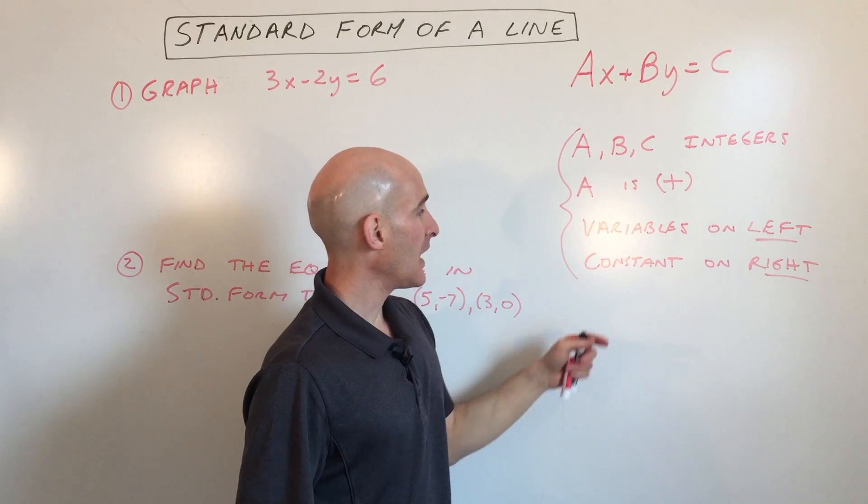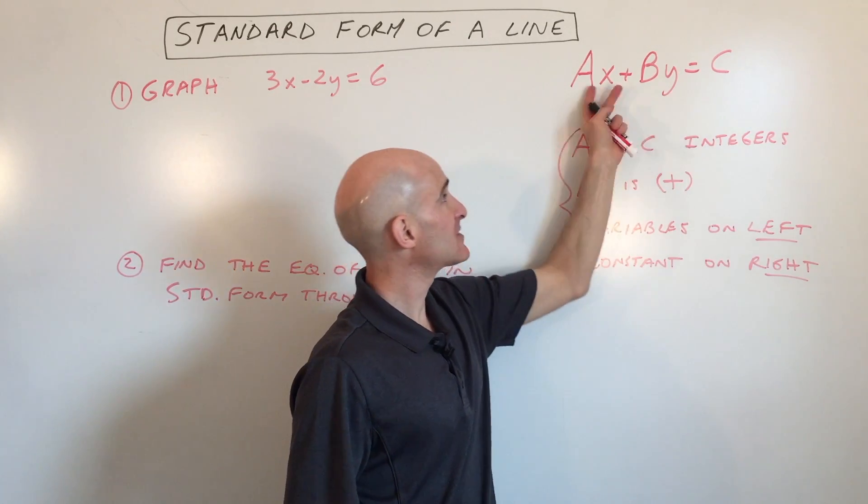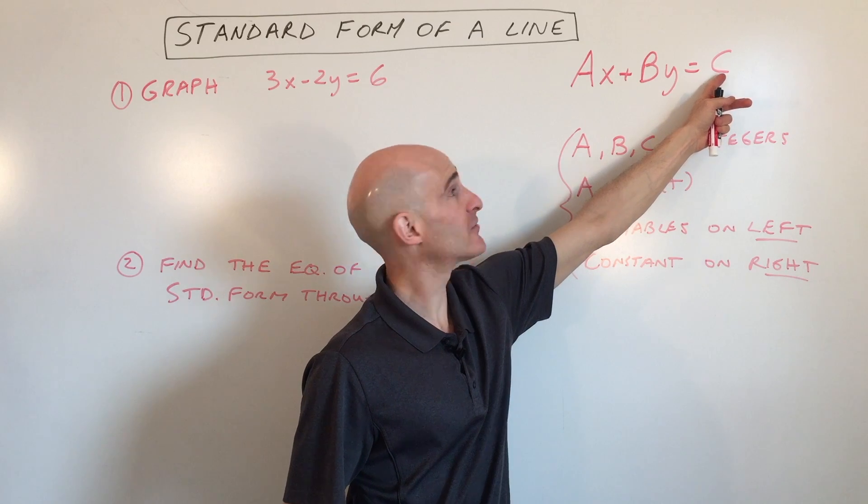The other ones can be negative. And you want the variables to be on the left side of the equation, and the constant, or the number itself, to be on the right side.